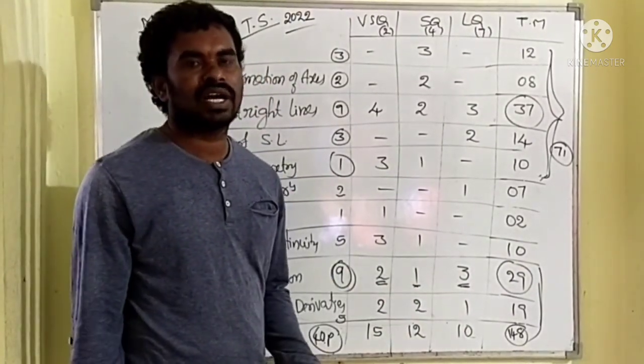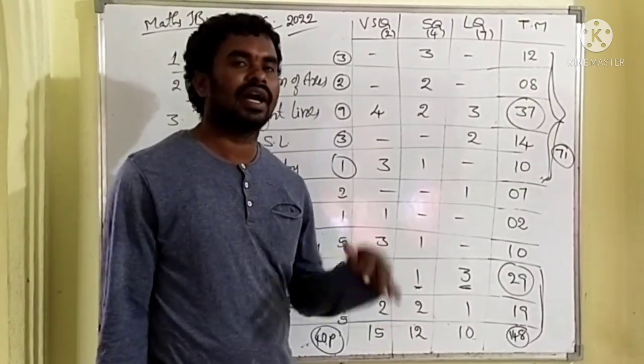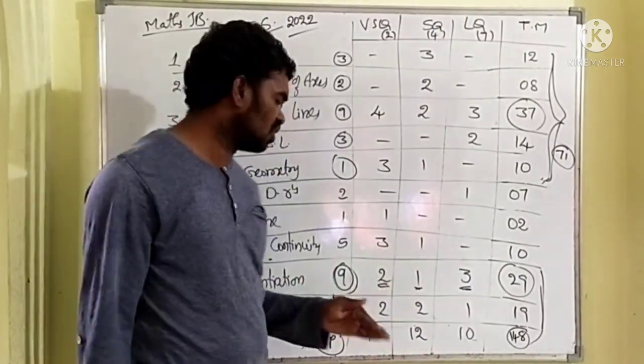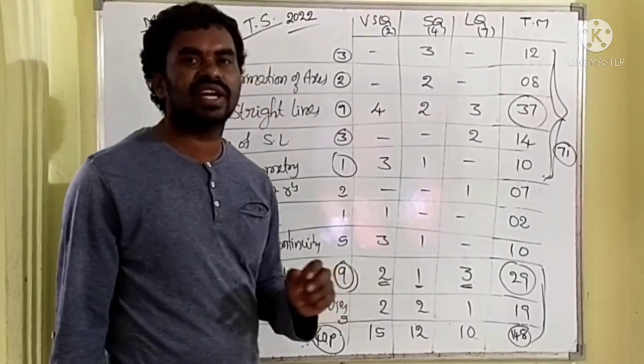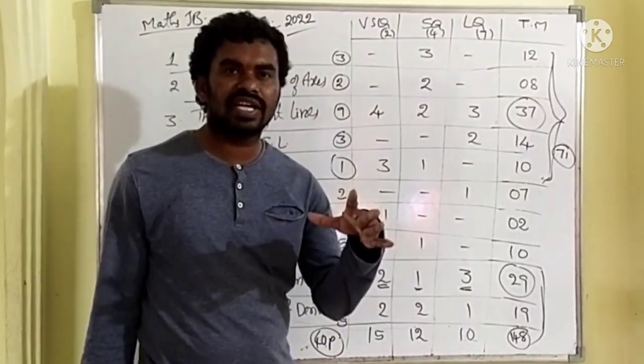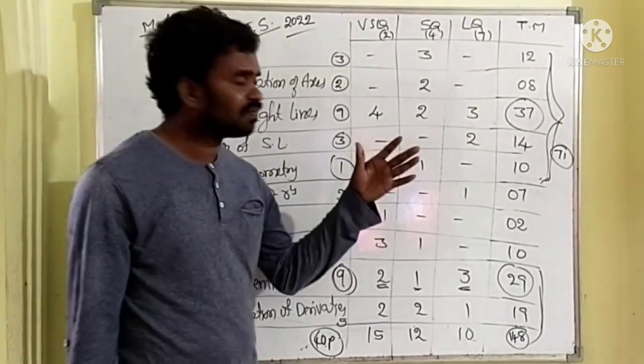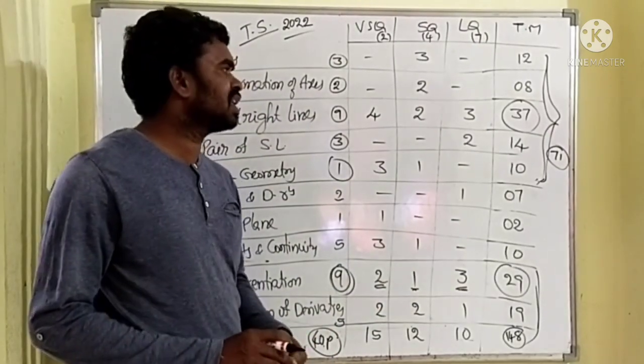In second year, maths 2B also, without the differentiation, we can't do the integration. And in degree level, in metric level also, this differentiation chapter is very, very useful. That's why, if you are clever students, don't see the marks. You try to get out of 75.